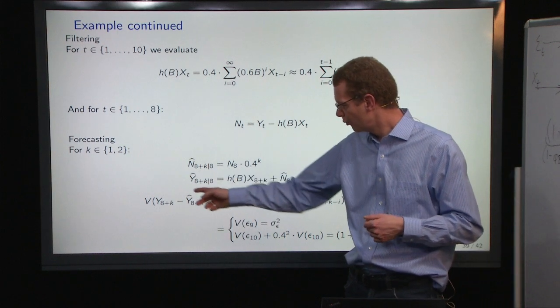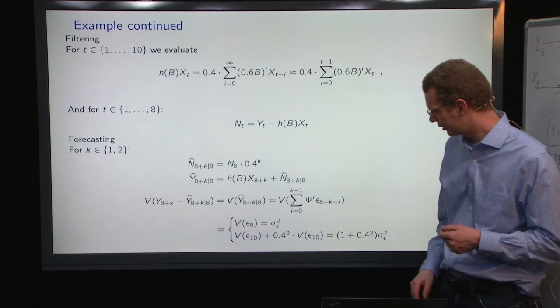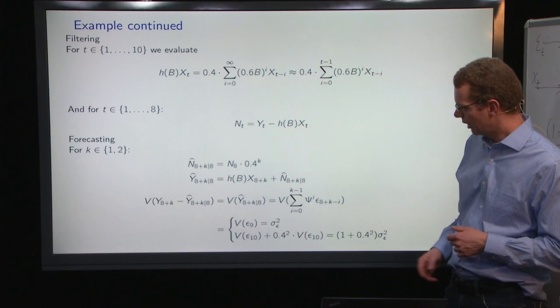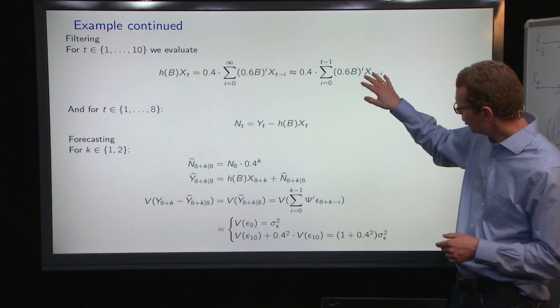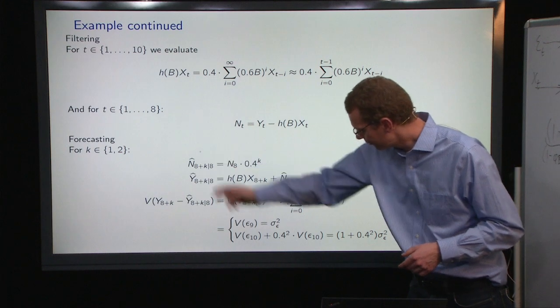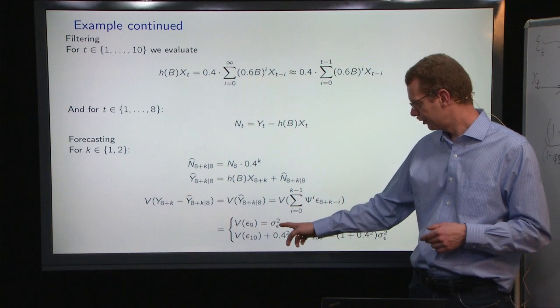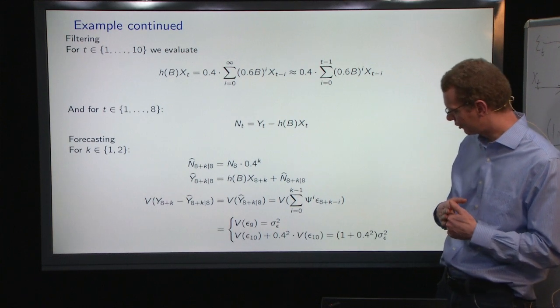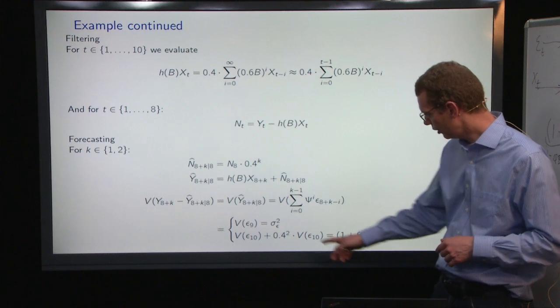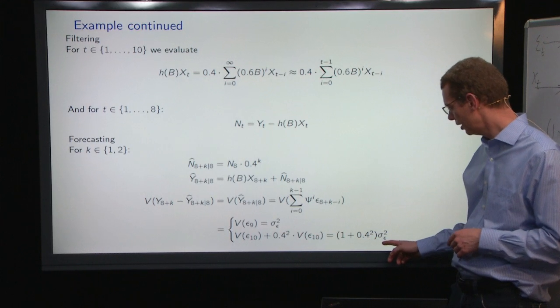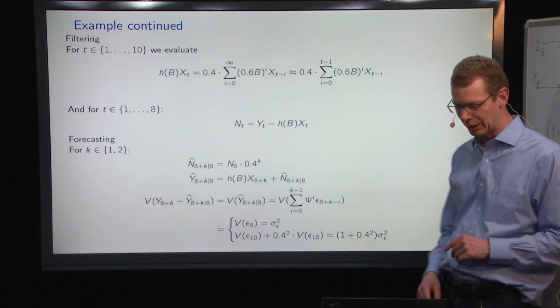With that, we have a model that we can look at, and then we can look at the variance of this K-step prediction error. Since we know the input, the only variance comes from the noisy part from the N here. So, for the one time step here, it's just sigma epsilon squared. If we want to take one step further, we have this coefficient of 0.4 that we then square to get to the variance domain here, and we get 1 plus 0.4 squared times sigma epsilon squared.